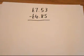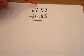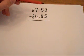Here we're going to take a look at the subtraction method we've been using in class lately, the complementary method. So we're going to do £7.53 take away £4.85.